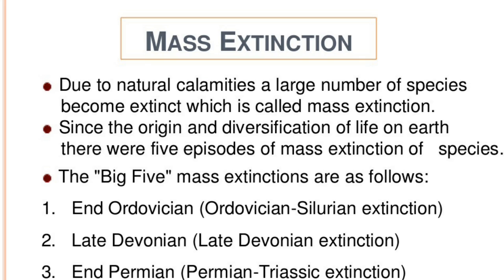The big five mass extinction events are: the Ordovician extinction, the Silurian extinction, the Late Devonian extinction, the end-Permian extinction, and the end-Triassic extinction.